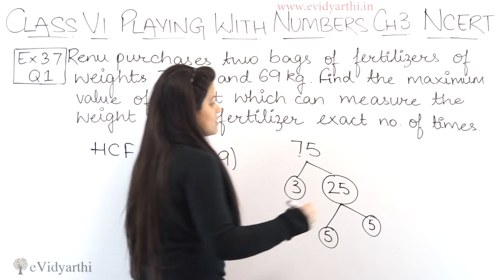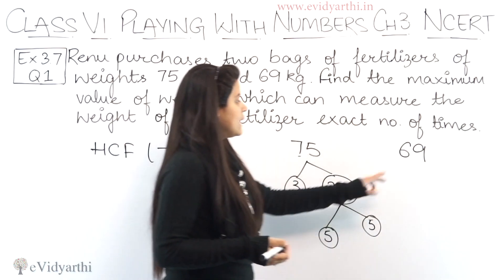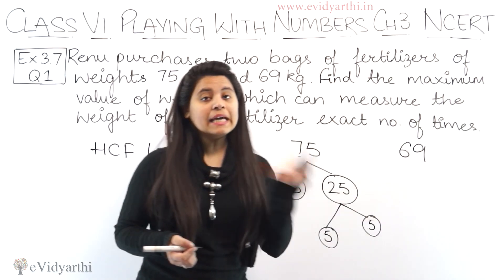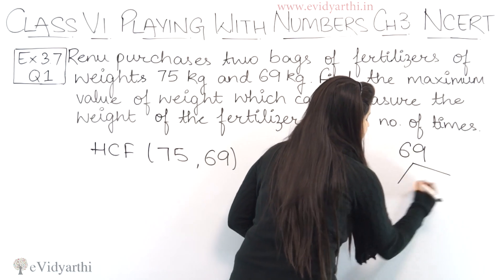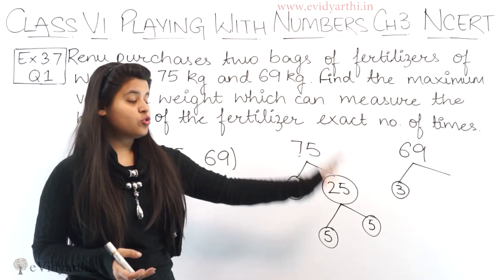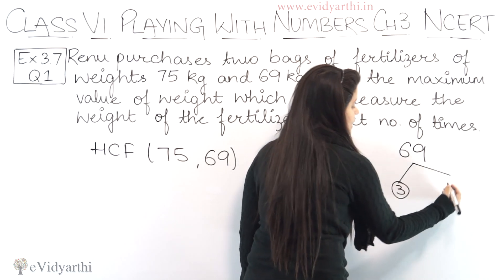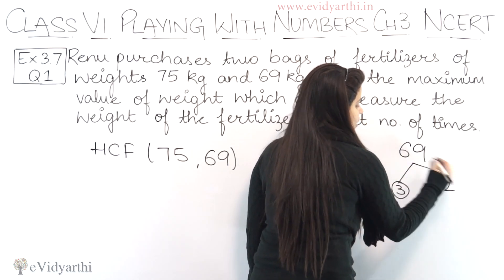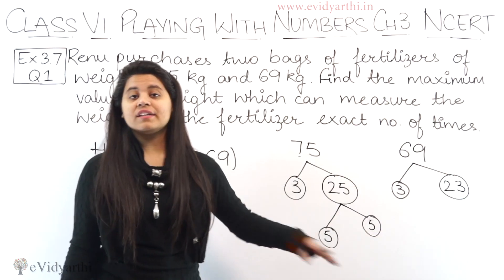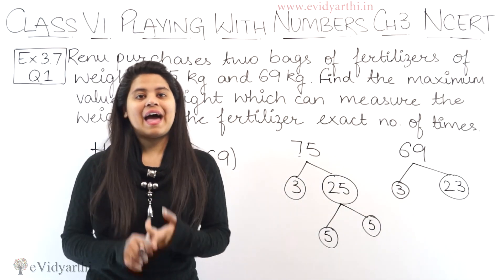Moving to 69: to find its factors, we add its digits — 9 plus 6 is 15 — which means 69 is divisible by 3. So one factor is 3. Now 3 multiplied by what gives 69? 3 into 23 is 69. Both 3 and 23 are prime numbers, so the prime factors of 69 are 3 and 23.